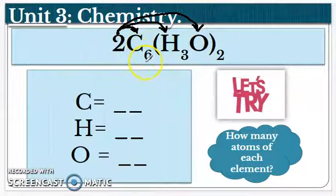Then we have our subscripts. Our subscripts are the little submarines that are going to attach to the element right next to it. So the six is going to affect the carbon. Here within the parentheses, we have three hydrogens. So we have a subscript three attached to the hydrogen. And now this is where it gets a little tricky.